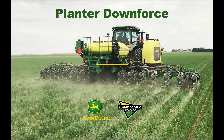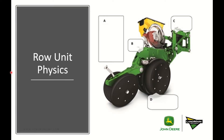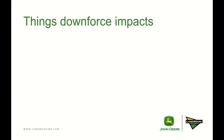Welcome. In this session we're going to talk about planter downforce and the importance of setting it correctly. We'll go over row unit physics, namely margin, and the three components that play a part in margin: the weight of the row unit, the downforce applied, as well as the resistance from the soil.